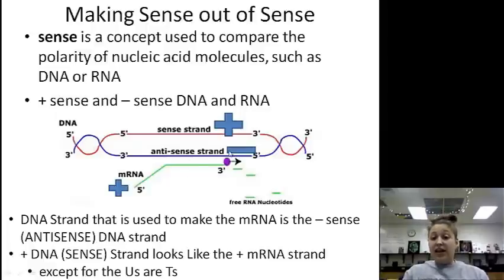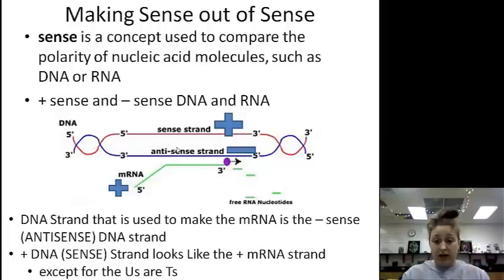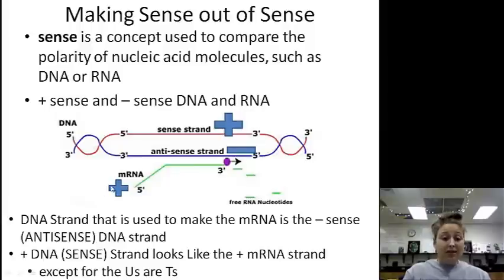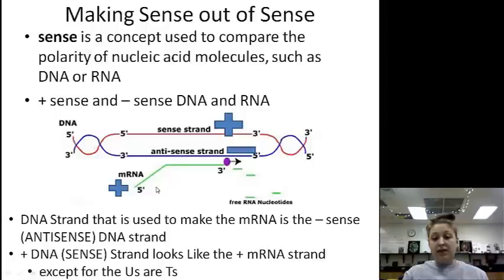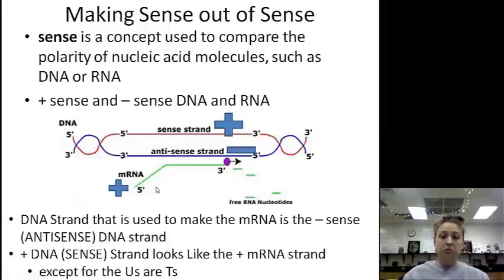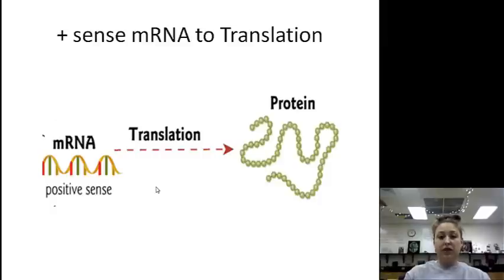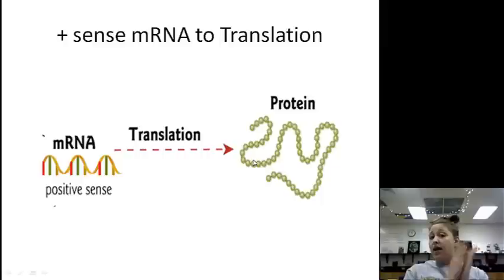Again, the antisense or negative strand is what you're going to use to make your mRNA. The plus-sense mRNA looks exactly like the plus-sense DNA, except where there were T's there are U's and where there are U's on one there are T's. Plus-sense mRNA is translated into proteins.